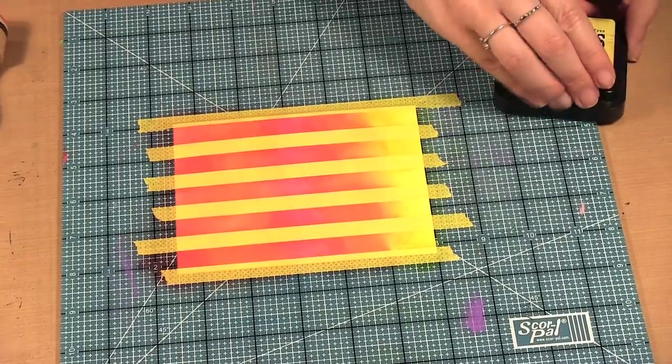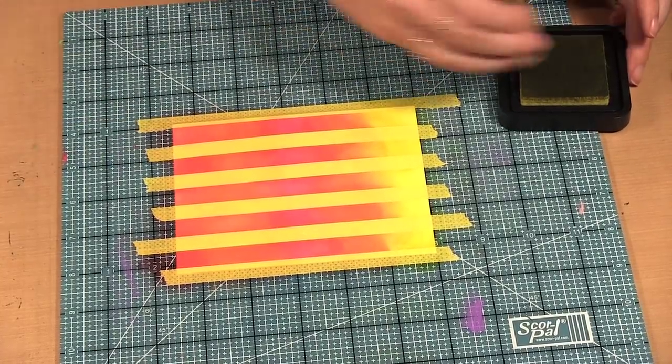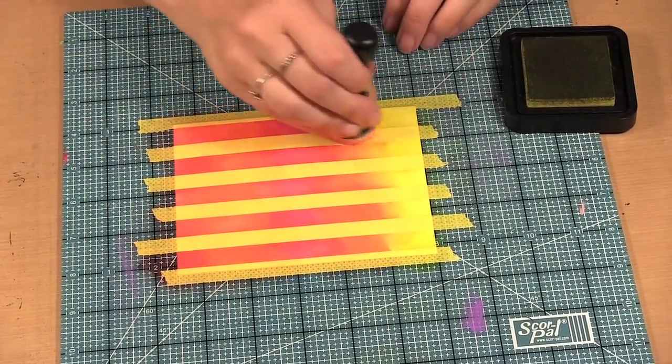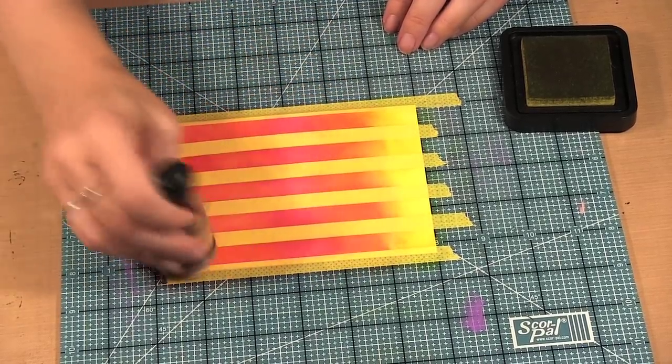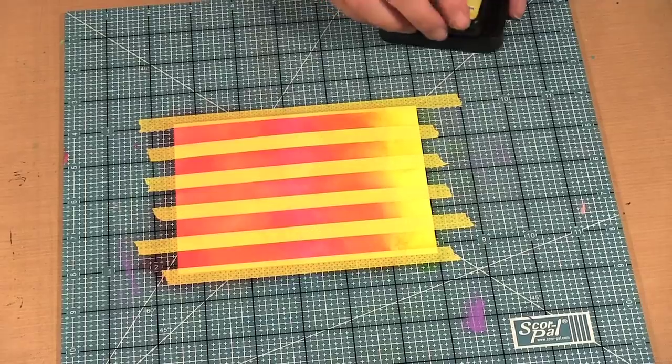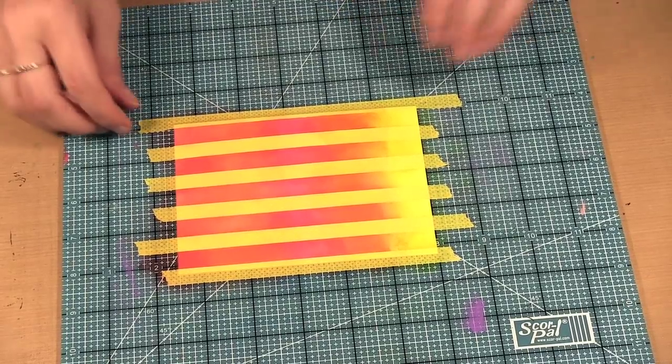And I'm going to end with some festive berries. And then as I said, I'm going to go back with a little mustard seed and just sort of blend that gradation. Okay, so now is the moment of truth of taking off the tape.